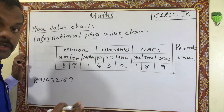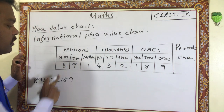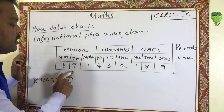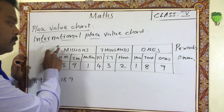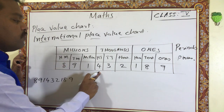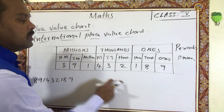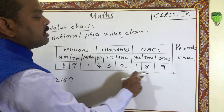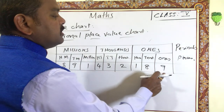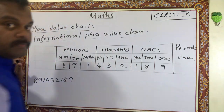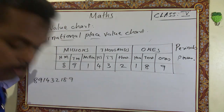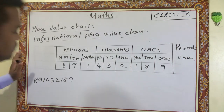So you read it as: eight hundred and ninety one million, four hundred and thirty two thousand, one hundred and eighty nine. That is how you read a nine-digit number in the international place value system.